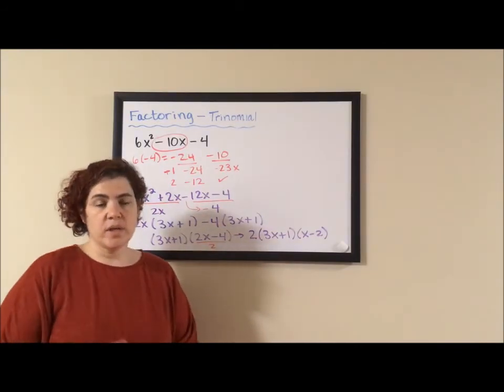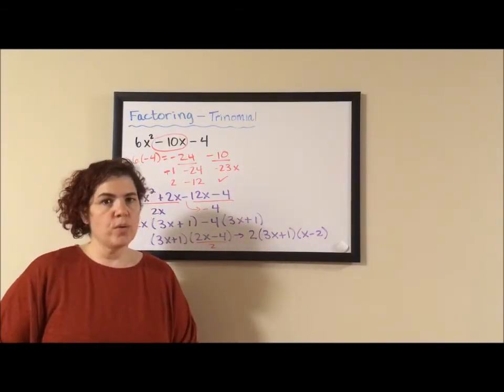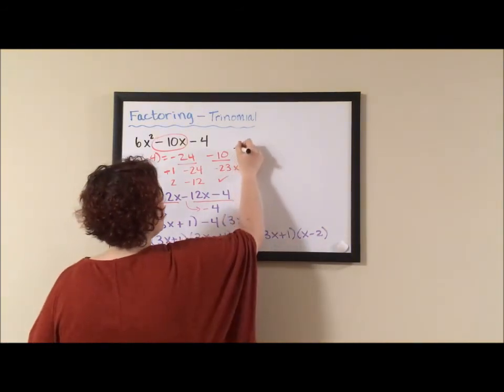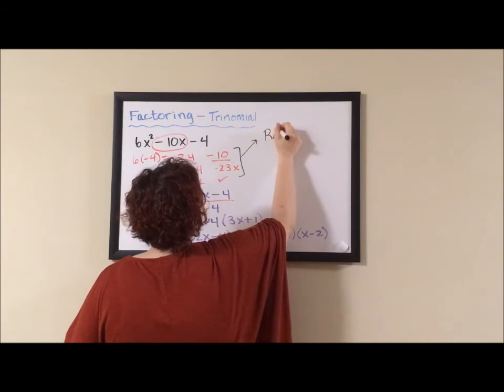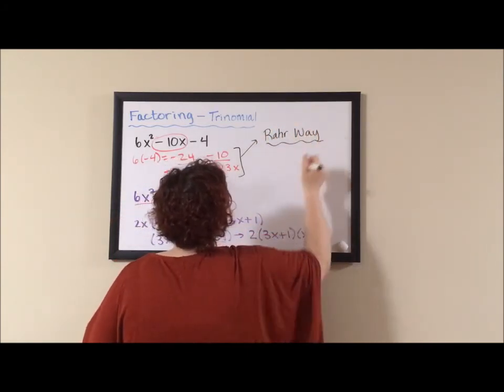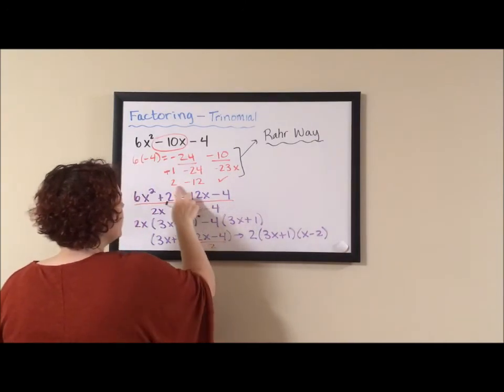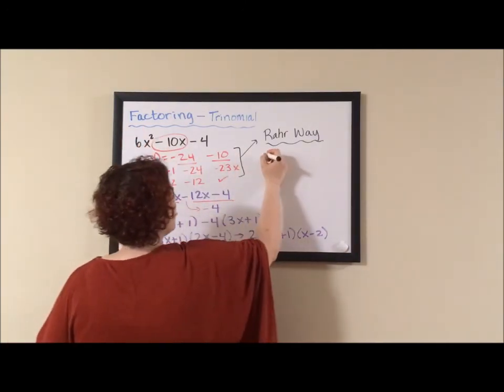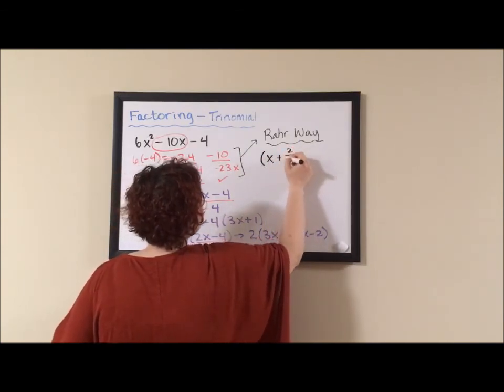As I have done with my other videos, I'm going to show you my funky fraction way. This kind of funky RAR way, as I'm calling it. The RAR way. If you're doing RAR way, once you get these factor pairs, you write them over A. So I have x plus 2 over 6.